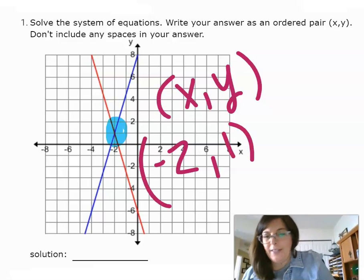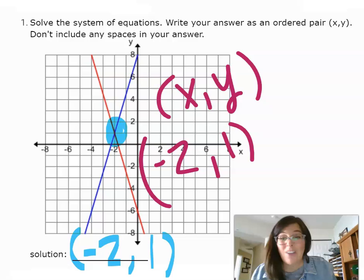So when you go to type this in, don't forget your parentheses. Negative two, a comma, and a one. No spaces. That's all it is.